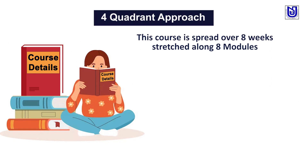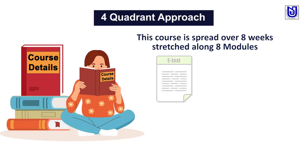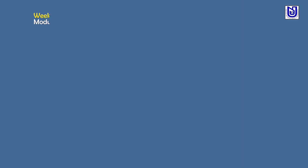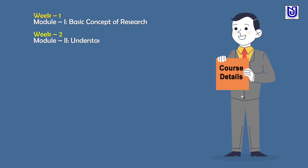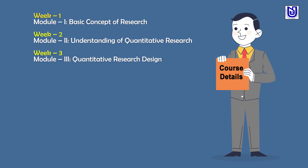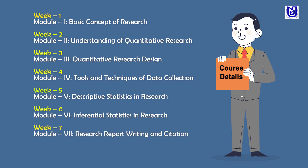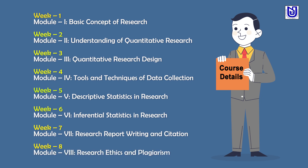This course is spread over eight weeks with eight modules, e-text, PPT, and assessment. In the first module there will be basic concepts of research. The second module covers understanding of quantitative research. The third module covers quantitative research design. The fourth module covers tools and techniques of data collection. The fifth module covers descriptive statistics in research. The sixth module covers inferential statistics in research. The seventh module covers research report writing and citation. And the last, eighth module will be based on research ethics and plagiarism.